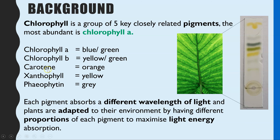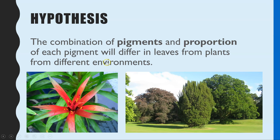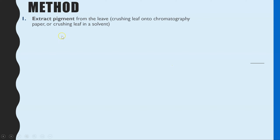Different plants will have different combinations of pigments, and that is dependent on the environment they are in, because certain environments will be emitting slightly different wavelengths of visible light. So the hypothesis in this required practical — you might be asked to compare the pigments in two different species of leaves. The hypothesis would be that the combination of pigments will differ in the plants depending on their environment. Some leaves might be more red or purple, or more yellow, or a more bluey-green color.